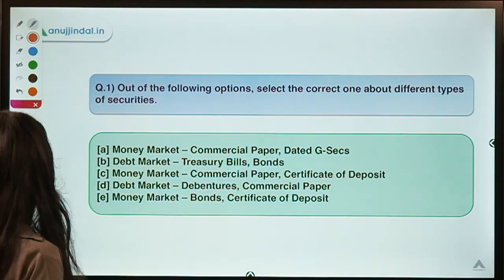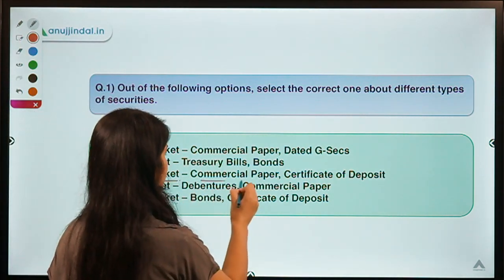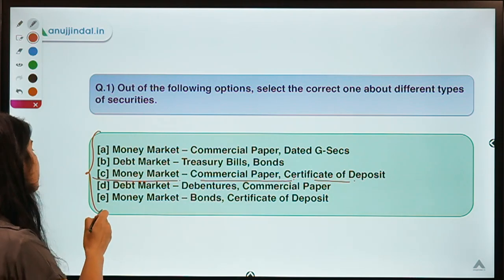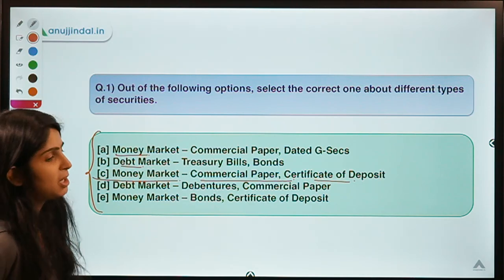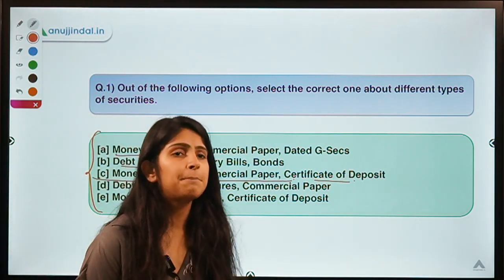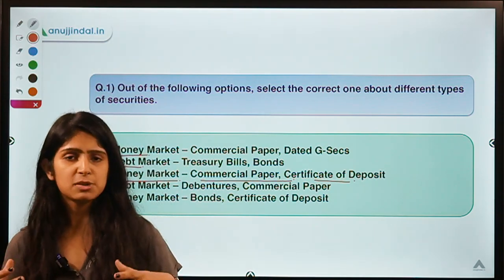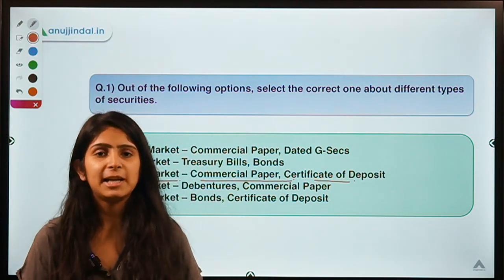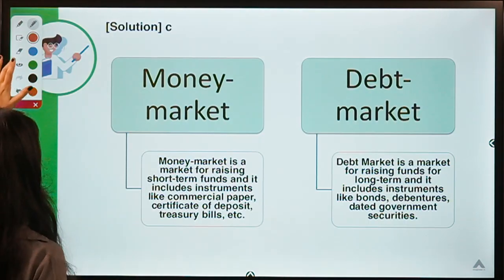The solution is option C — money market, which includes commercial paper and certificate of deposit. To answer these types of questions, you should know the meaning of the money market and the debt market. Both markets are used for raising money. Companies or entities that need money can come into these markets — they act as a matchmaking point for lenders and borrowers. But what is the difference between the two?